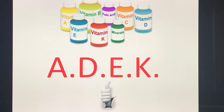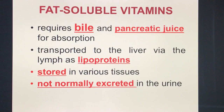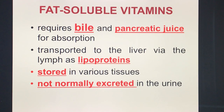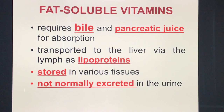The fat-soluble vitamins are A, D, E, and K — ADEK. Key characteristics: number one, fat-soluble vitamins require bile and the presence of pancreatic juice for absorption. They are transported to the liver via the lymph in the form of lipoproteins.